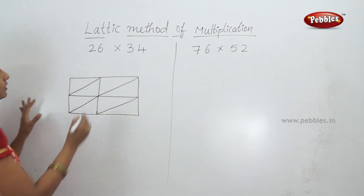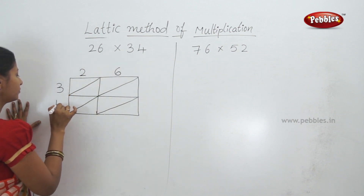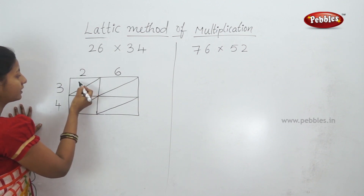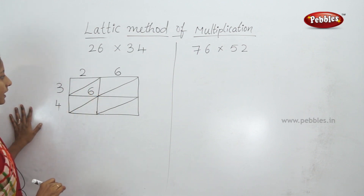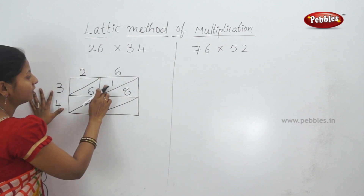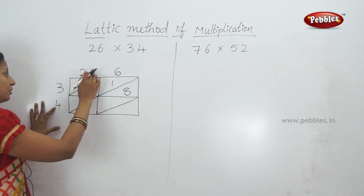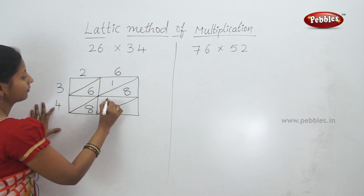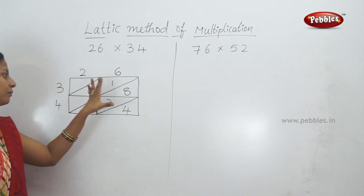Now we arrange numbers: 26 with digits 2 and 6, and 34 with digits 3 and 4 on the left side. We will multiply these numbers. 3 times 6 is 18 — a 2-digit number, so the left part is 1 and the right part is 8. Next, 4 times 6 is 24, written as 2 and 4.